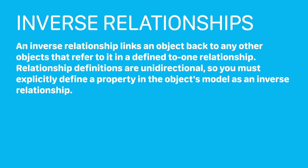Talking about inverse relationship: an inverse relationship links an object back to any other object that refers to it in a defined to-one relationship. Relationship definitions are unidirectional, so you must explicitly define a property in the object's model as an inverse relationship. By having an inverse relationship, we can access the data from both sides of the entity, making it easy for a developer to fetch data from either side. However, this might have disadvantages when we have to show exact data to the user but our object also contains some other data inside, which could become a cause for data leakage.